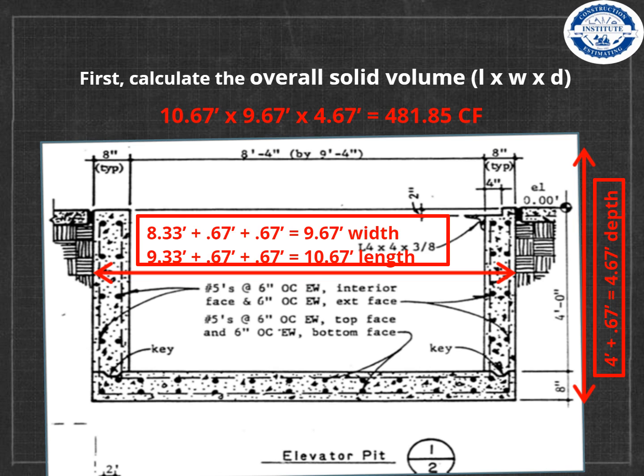Now take a look at the length in parentheses: 9 feet 4 inches, or 9.33 feet. Add the two walls (0.67 feet + 0.67 feet) to give you a total length of 10.67 feet.